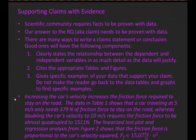Let's take a look at what a claim statement would look like for the research question we've been tracking. Increasing the car's velocity increases the friction force required to stay on the road. The data in Table 1 shows that a car traveling at 5 meters per second only needs 379 newtons of friction force to stay on the road, whereas doubling the car's velocity to 10 meters per second requires the friction force to be almost quadrupled to 1,511 newtons. The linearized test plot and regression analysis from Figure 2 shows that the friction force is proportional to the car's velocity squared—that is, the force of friction equals 15.07 kilograms per meter times the velocity squared. Notice this statement meets all three requirements of supporting a claim with evidence. This ends our podcast on the fundamentals of scientific investigation.